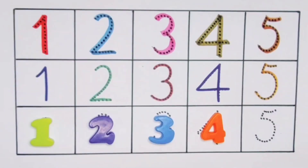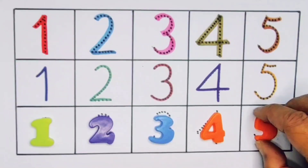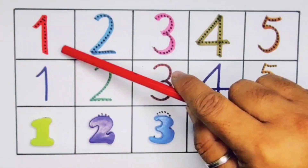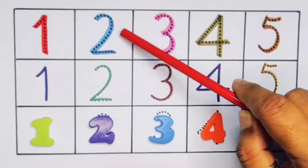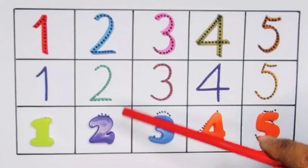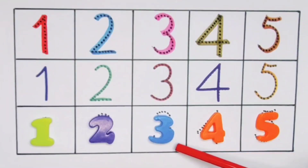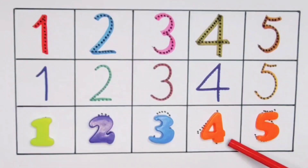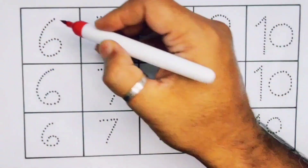Next, number 5, repeat again, number 5. What we learn — we learn 1, 1, 1, 2, 2, 2, 3, 3, 3, 4, 4, 4, 5, 5, 5. Next, 6.